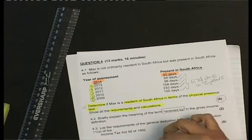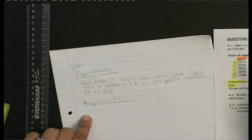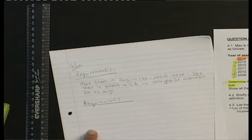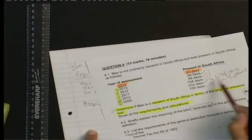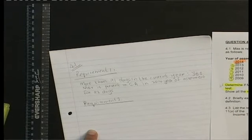To summarize 4.1: requirement two is met because Max is more than 91 days in each of the previous five years, but requirement three is not met because he is only 679 days in total, not the required more than 915 days. Because Max does not comply with requirement three — although he complied with requirements one and two — he is not a resident of South Africa.